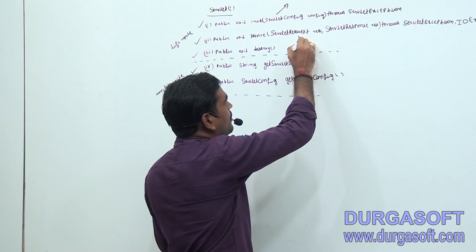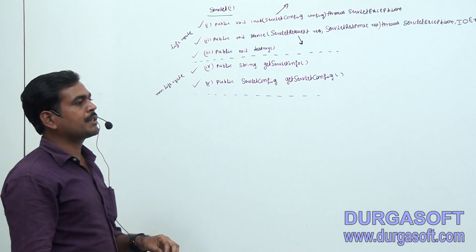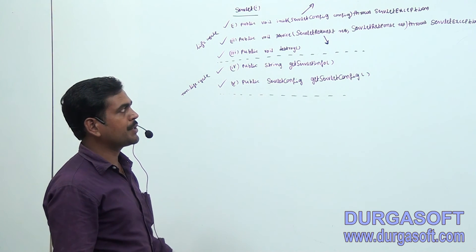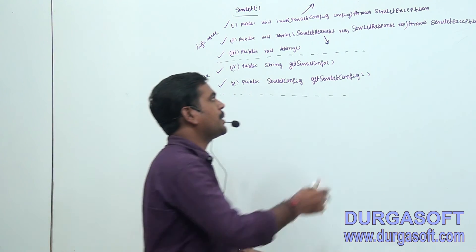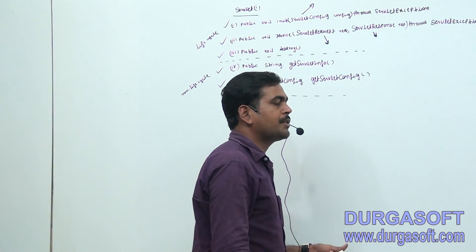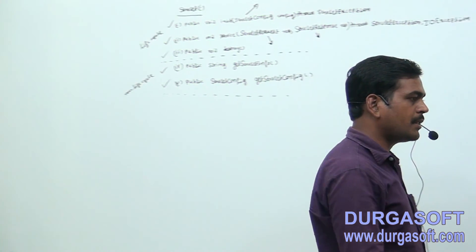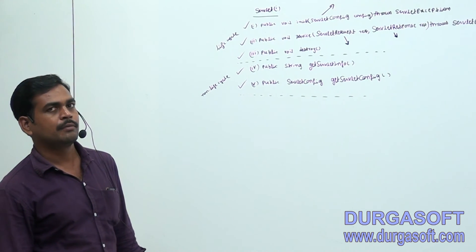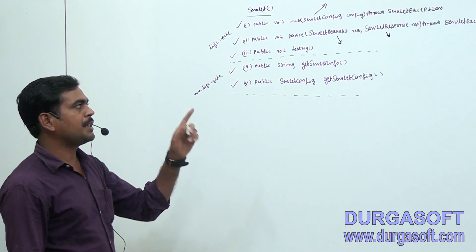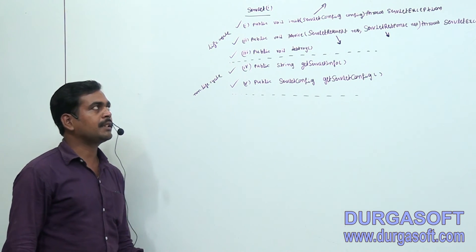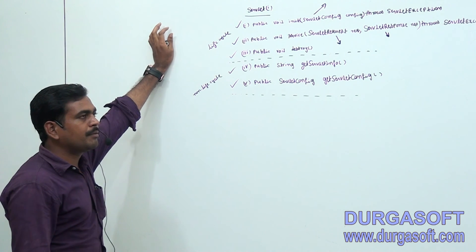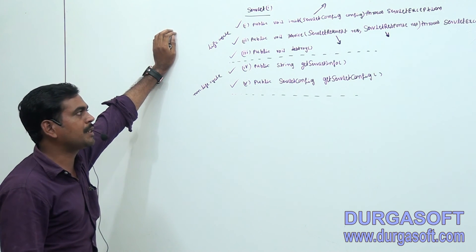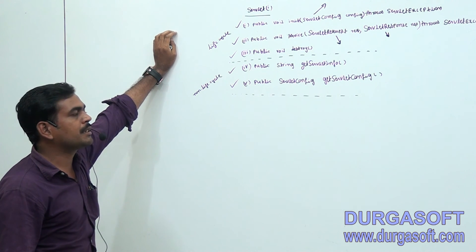ServletConfig is responsible for taking the end user's entered input values using the request object. The response object is used to get the browser stream object and to send the response back from the server side to the browser side — whatever the end user expects. That is the functionality of ServletResponse. Like this, totally some lifecycle methods are there in the Servlet interface, and each method has its own use.